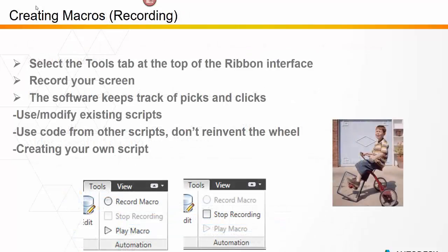Select the Tools tab at the top of the ribbon interface and record your screen. The software will keep track of the picks and clicks and turn this into a script. There are really three ways to create a macro: use or modify existing scripts, use code from other scripts, or create your own scripts.